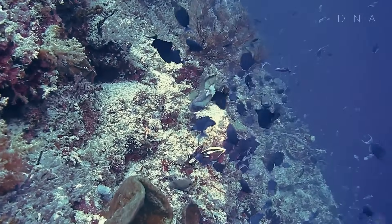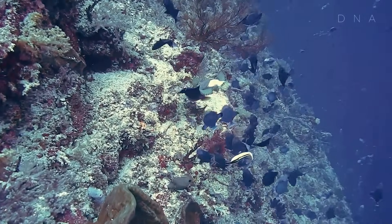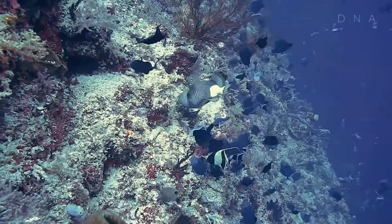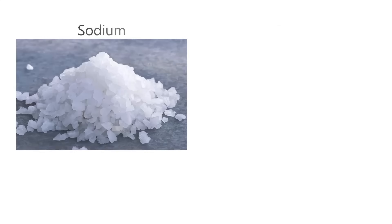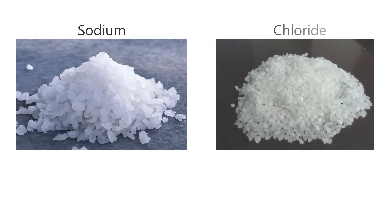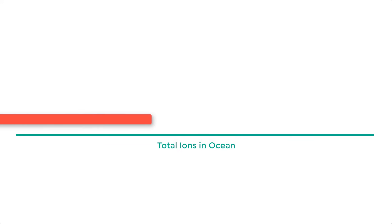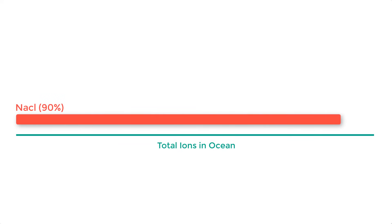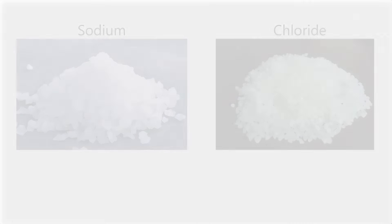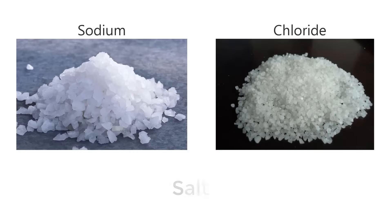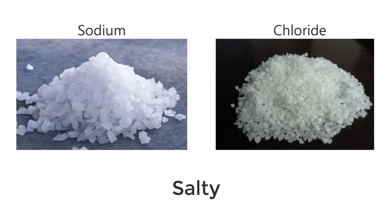Two of the most prevalent ions in seawater are sodium and chloride, which is NaCl. Together, they make up over 90% of all the dissolved ions in the ocean. Both sodium and chloride are salty.